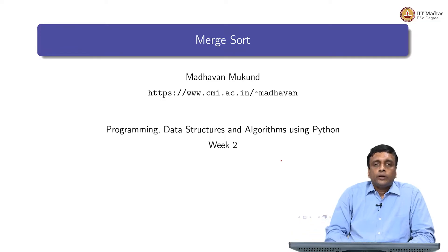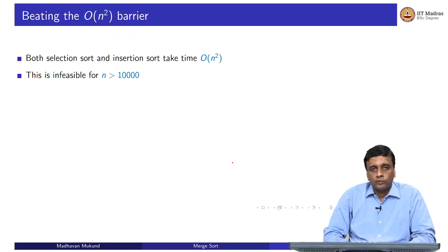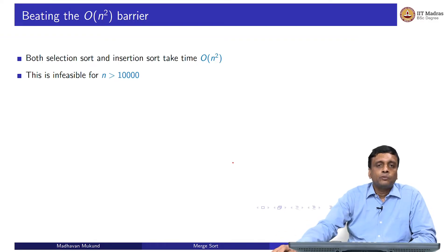We have seen two intuitive algorithms, insertion sort and selection sort, and both of them happen to be n squared. We know that n squared is not good because if we go beyond something like 10 to the power 4, you will start getting algorithms which take too long to be feasible in practice. So we would like something which is better than n squared.